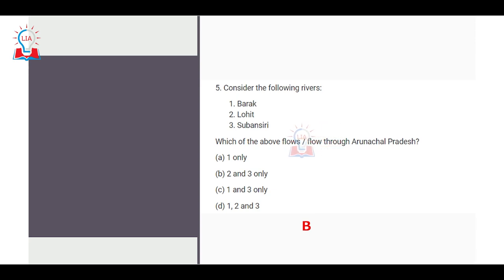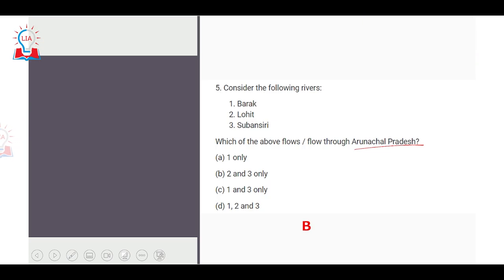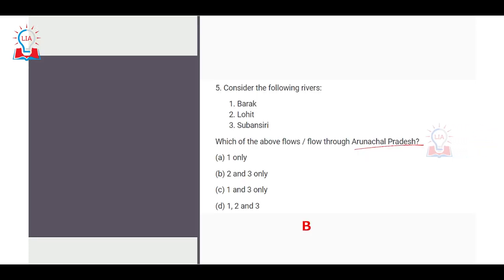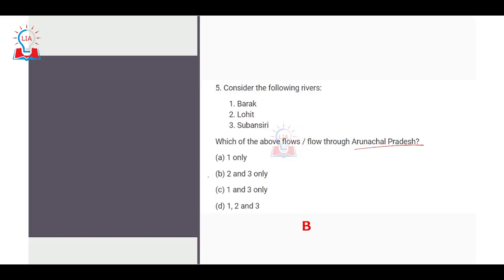The fifth question is related to rivers — a favorite UPSC topic. Three rivers are given: Barak, Lohit, and Subansiri. It is asked which of these flow through Arunachal Pradesh. Lohit River flows through Arunachal Pradesh and is a tributary of the Brahmaputra. Subansiri River originates from the Tibetan Plateau and meets the Brahmaputra in Assam, but also flows through parts of Arunachal Pradesh. However, the Barak River flows in Manipur and Mizoram, not Arunachal Pradesh. So the correct answer is B — only the second and third rivers flow through Arunachal Pradesh.